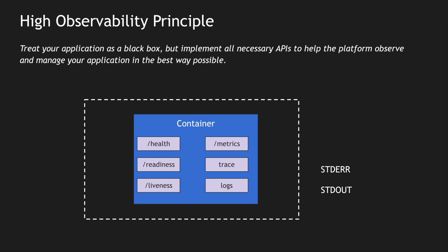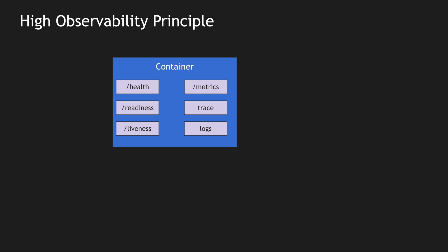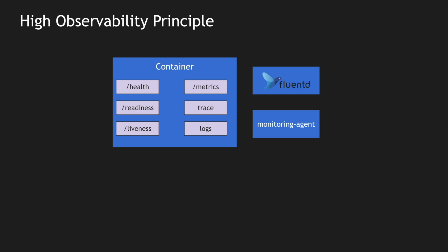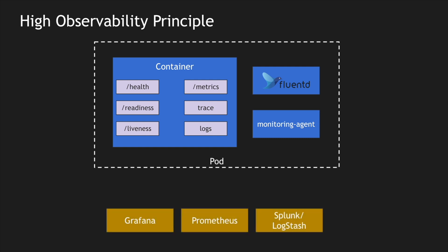Imagine I have this container with all APIs exposed. I need to expose my logs and get my metrics out. I can have a sidecar which is Fluentd, and also a monitoring agent which takes all my metrics and pushes them to a different platform. For example, I push my logs into Splunk or a Logstash server from the Fluentd instance, and from my monitoring agent I push data to Prometheus so I can use Grafana to view all the metrics. The high observability principle states that you need to implement all these API implementations so the platform can collect information to monitor your application in the best possible way.